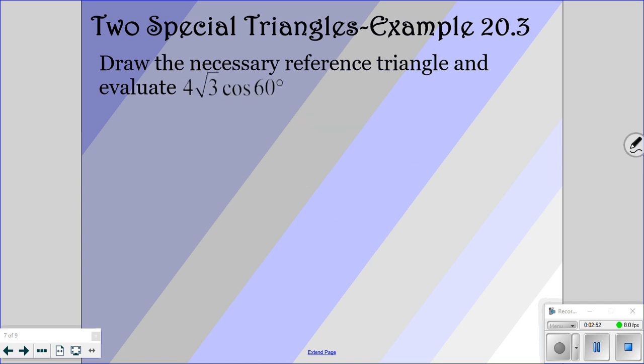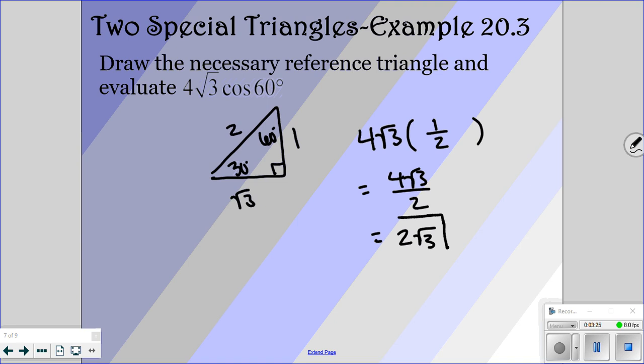Okay, we're going to look at another one. We want to find the cosine of 60. So I'm going to draw my 30-60-90 triangle again. So we have 1, square root of 3, and 2. And then we have 4 square root of 3 times the cosine of 60. So cosine is adjacent over hypotenuse. So adjacent is 1, and your hypotenuse is 2. So 1 over 2. So that's 4 square root of 3 over 2, which is 2 square roots of 3. So that would be your answer for that one.